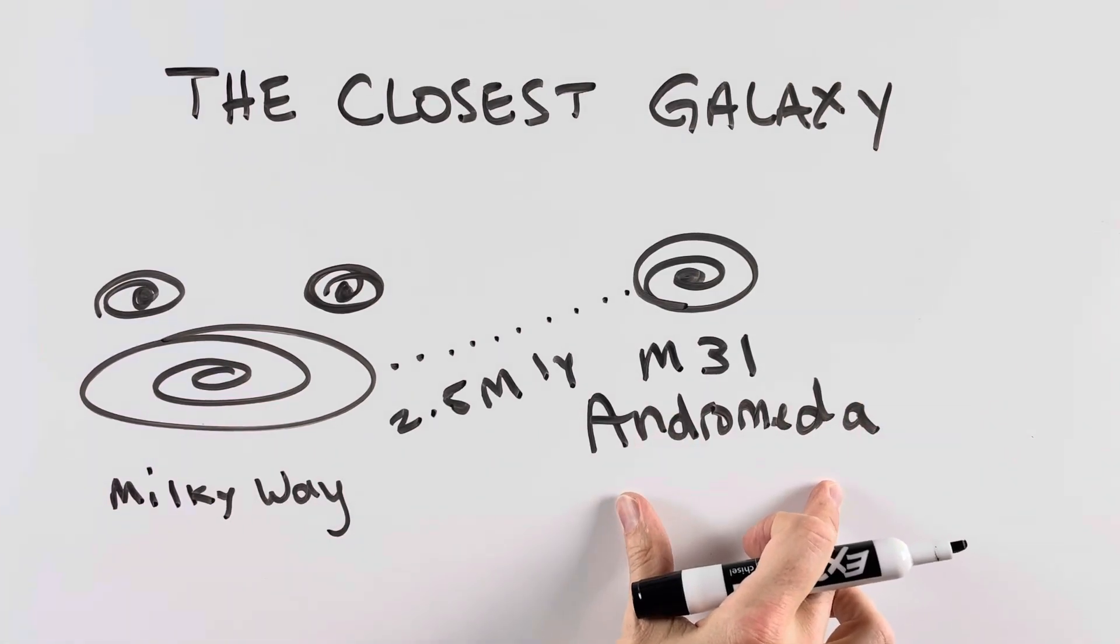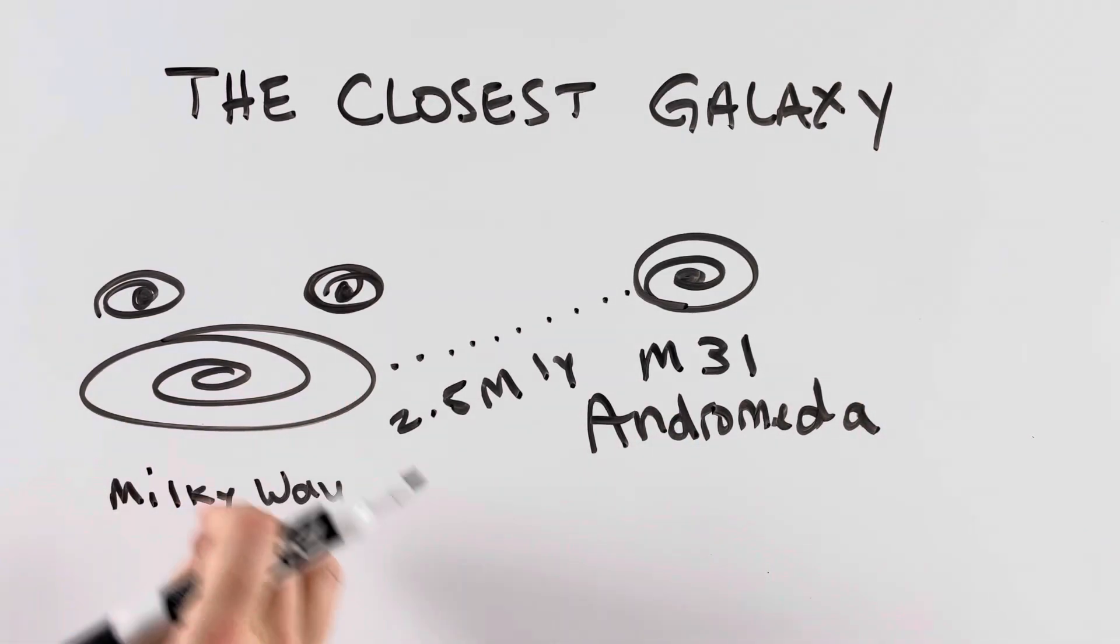But we also have these dwarf galaxies that are difficult for us to see around the outside of the Milky Way as well. So that's the closest one.